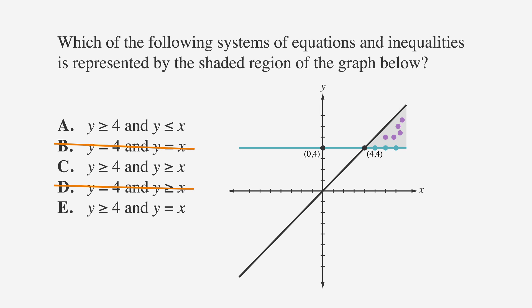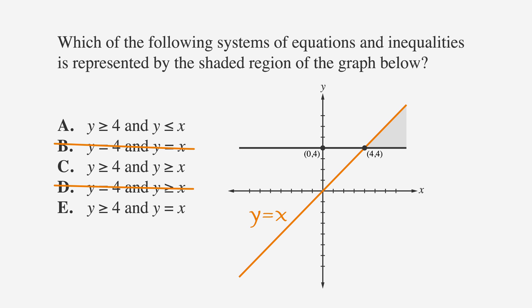All of the answer choices also contain some version of y greater than, equal to, or less than x. Looking at the graph, this line is y equals x. Let's pick a point to see if y can be greater than x and still be in the shaded region — how about x equals 4 and y equals 5? Nope, that's not in the shaded region. y is not greater than x, so cross off answer choice C. y can be equal to x, like these points, and y can also be less than x — like where x equals 7 and y equals 5. So E is incorrect. y is not only equal to x; it can also be less than x, which means the correct answer is A.